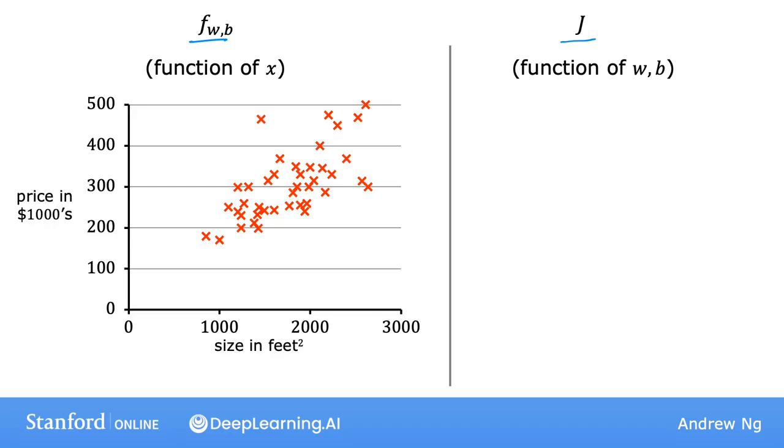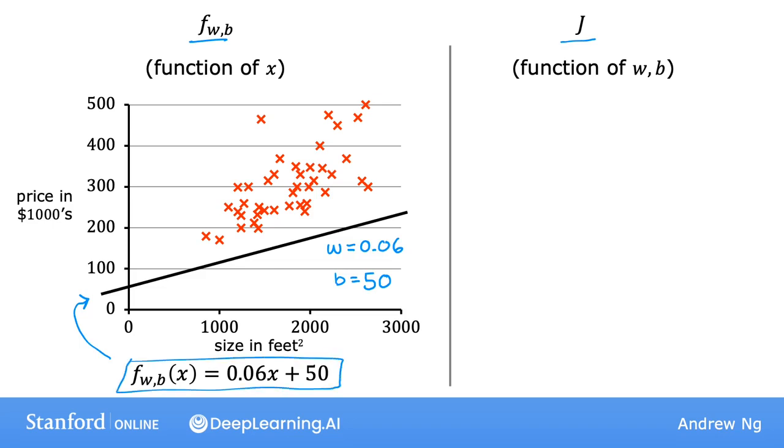Let's say you pick one possible function of x, like this one. Here, I've set w to 0.06 and b to 50. So f of x is 0.06 times x plus 50.